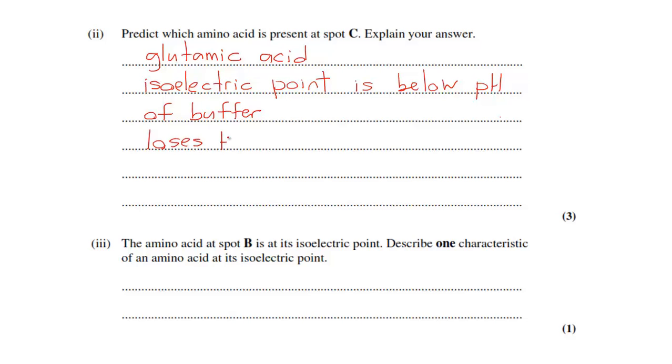Secondly it loses the H+ ion, the hydronium ion, to become negatively charged. Part 3, one characteristic of an amino acid at its isoelectric point: has no overall charge because it forms a zwitterion.